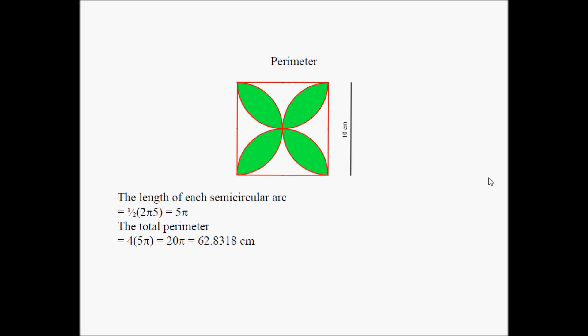Now let's find the perimeter of this shape. The perimeter is not that bad. Why? Because, essentially, the region is surrounded by 4 semicircular arcs: 1, 2, 3, 4.